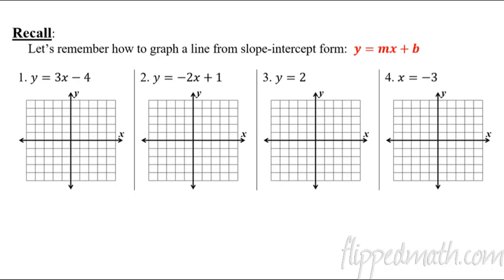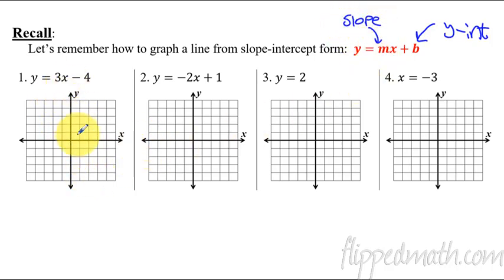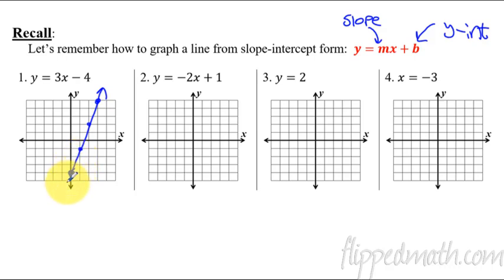Let's do some quick — and I mean quick, really fast — review. This right here, what is that thing? Y-intercept. This should be second nature to you by now. This is the slope, the rise over the run. So we're going to graph these things. Negative 4 — notice these are all equal signs. 1, 2, 3, 4 — there's our y-intercept. 3 over 1: up 3, right 1. There is our slope, and there is our line. Y-intercept negative 4, slope of up 3 over 1.